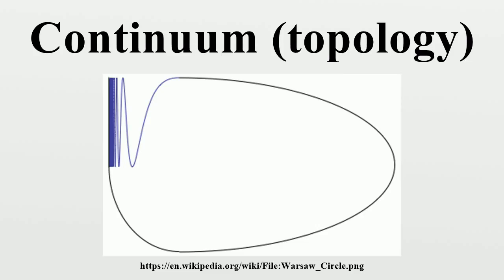An N-cell is a space homeomorphic to the closed ball in the Euclidean space Rⁿ. It is contractible and is the simplest example of an N-dimensional continuum. An N-sphere is a space homeomorphic to the standard N-sphere in N+1-dimensional Euclidean space. It is an N-dimensional homogeneous continuum that is not contractible, and therefore different from an N-cell.